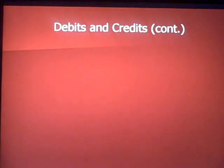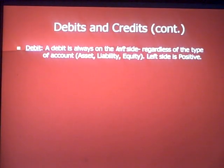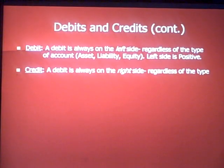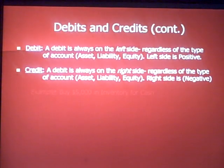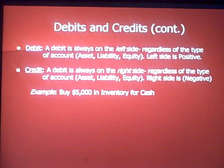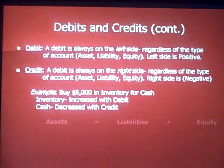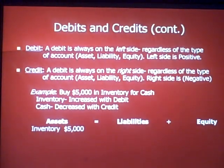We account for transactions using debits and credits. A debit is always on the left side, regardless of the type of account — debit always means left, and it is always a positive number. A credit is always on the right-hand side, regardless of the type of account — the right side is negative, and we put brackets around a credit when writing it out.